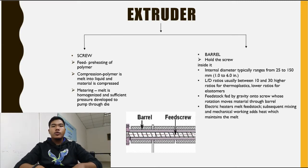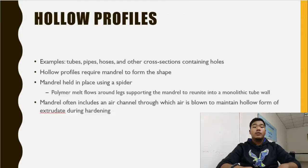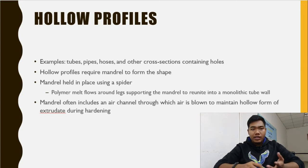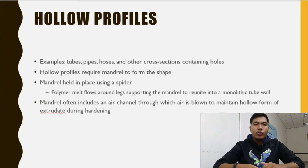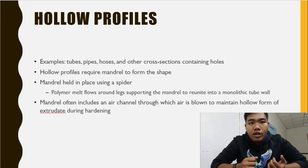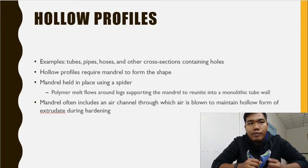There are two main components of an extruder: the barrel and the screw. The extruder screw is divided into three sections: the feed section, the compression section, and the metering section. The next method is hollow profiles, suitable for tubes, pipes, and hoses — products that have a cross-section with holes. Hollow profiles use a mandrel to form the shape, held in place by a spider. Molten material flows around the legs supporting the mandrel to reunite into a monolithic tube wall. The mandrel often includes an air channel through which air is blown to maintain the hollow form of the extrudate during hardening.